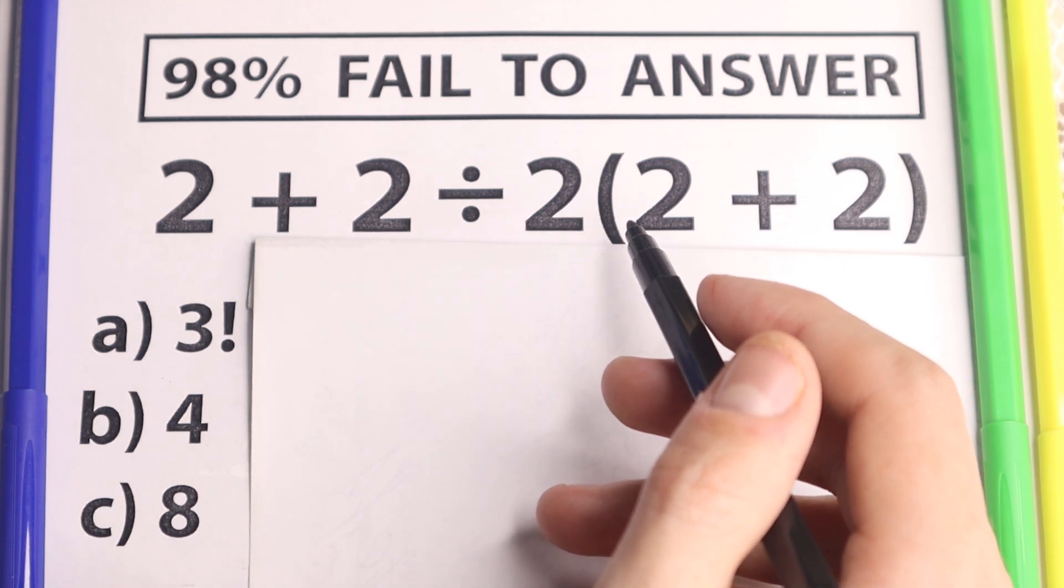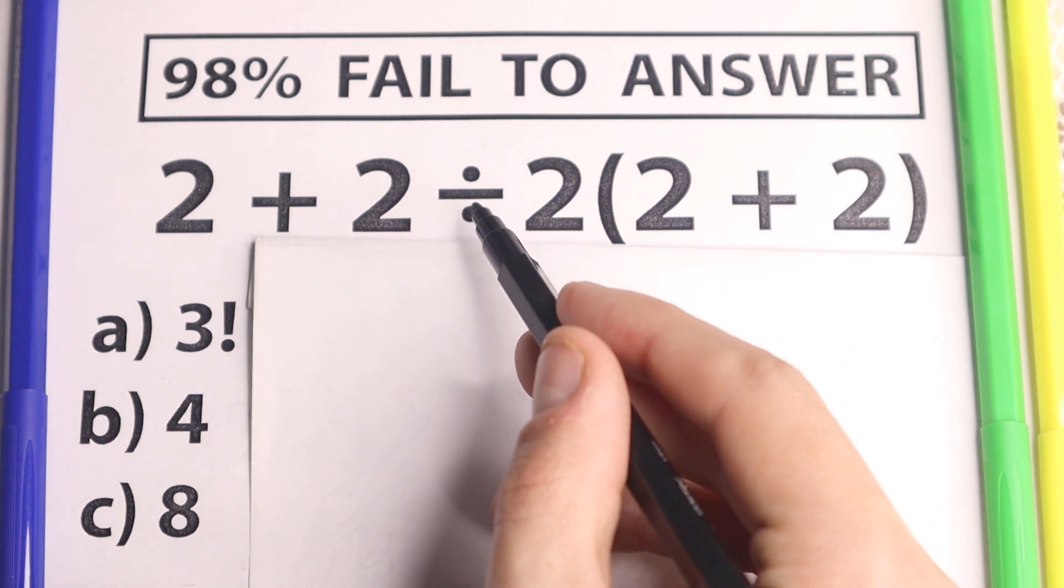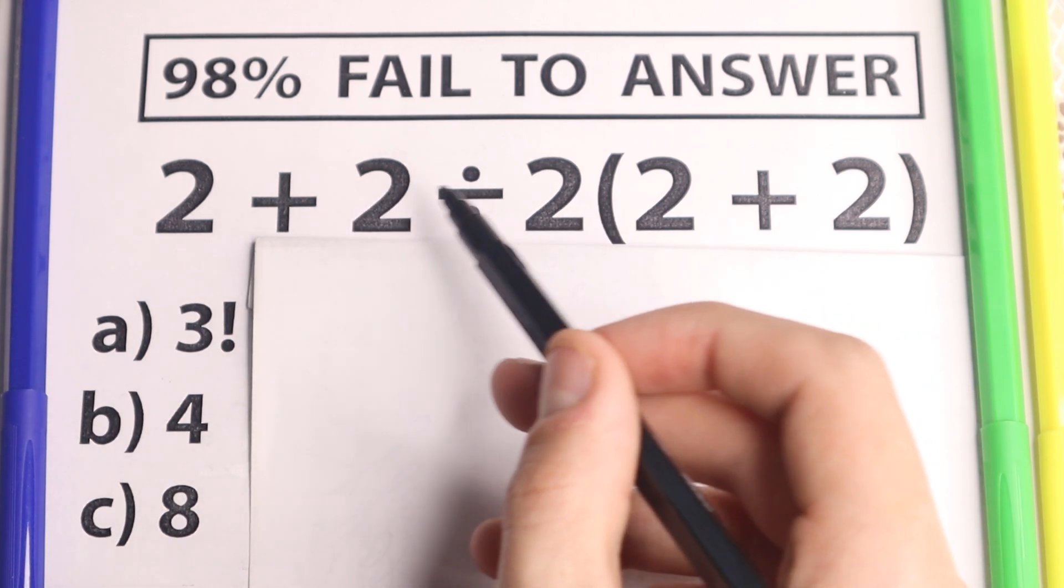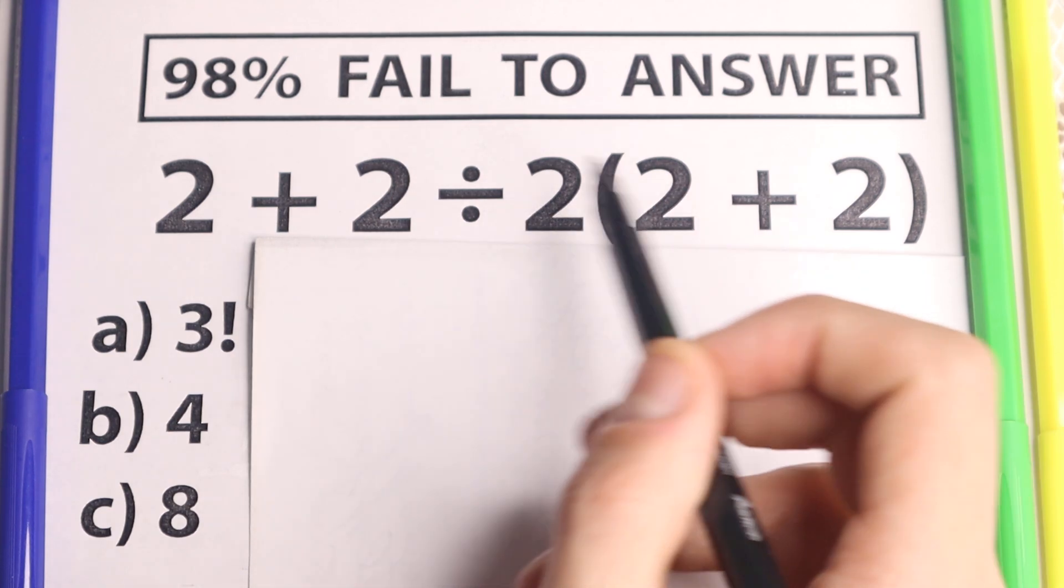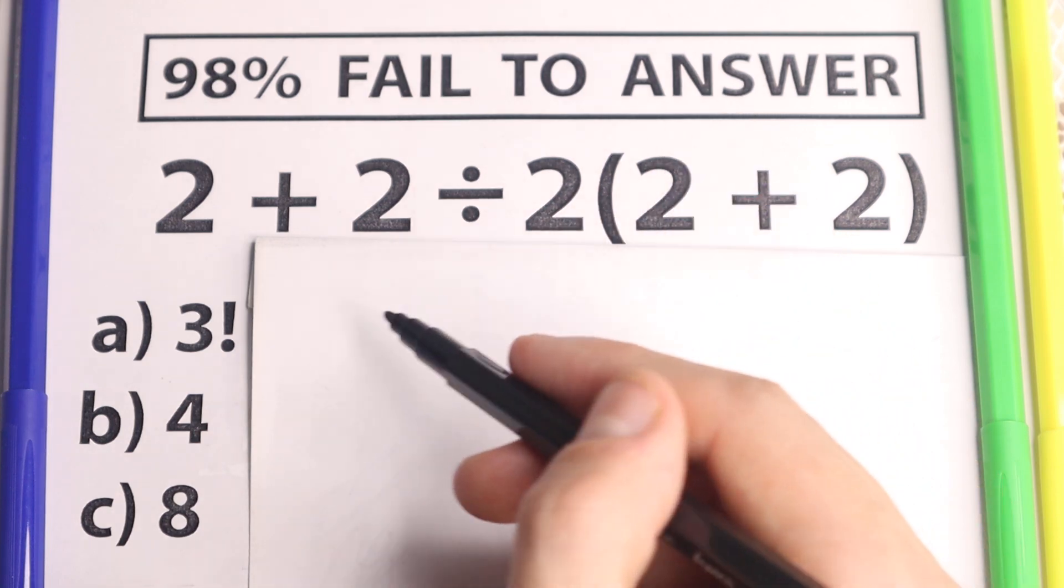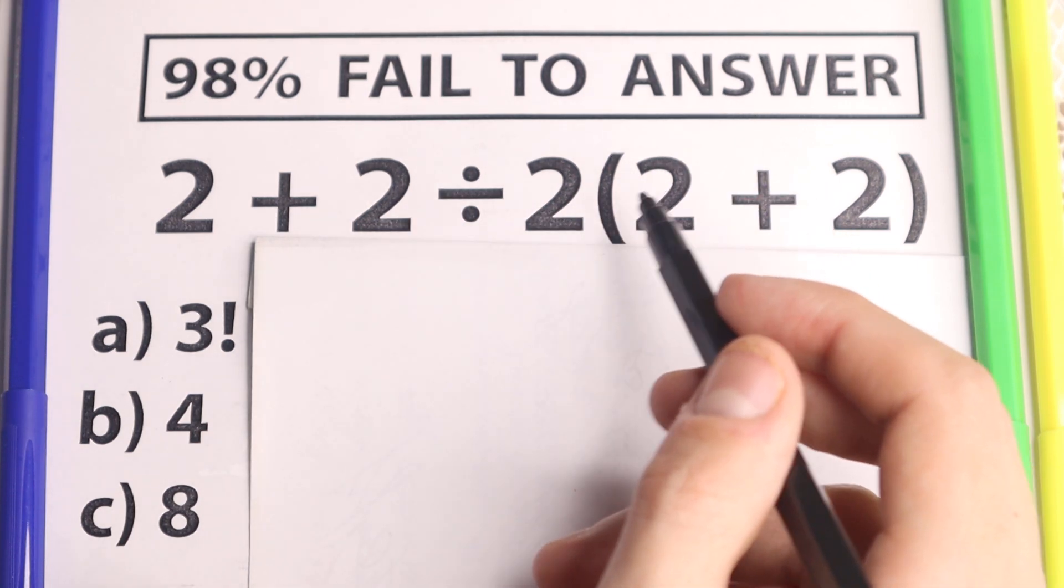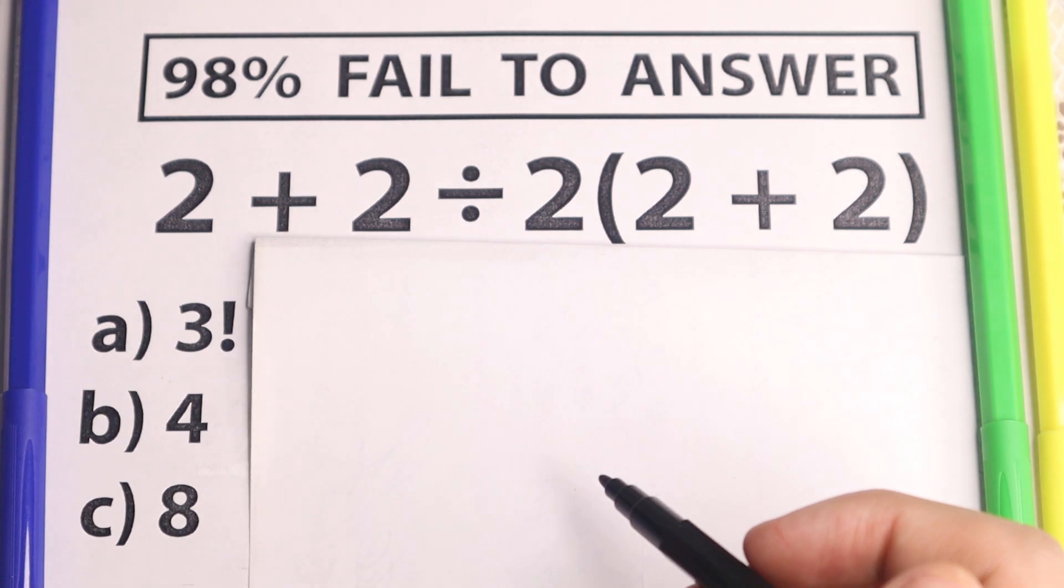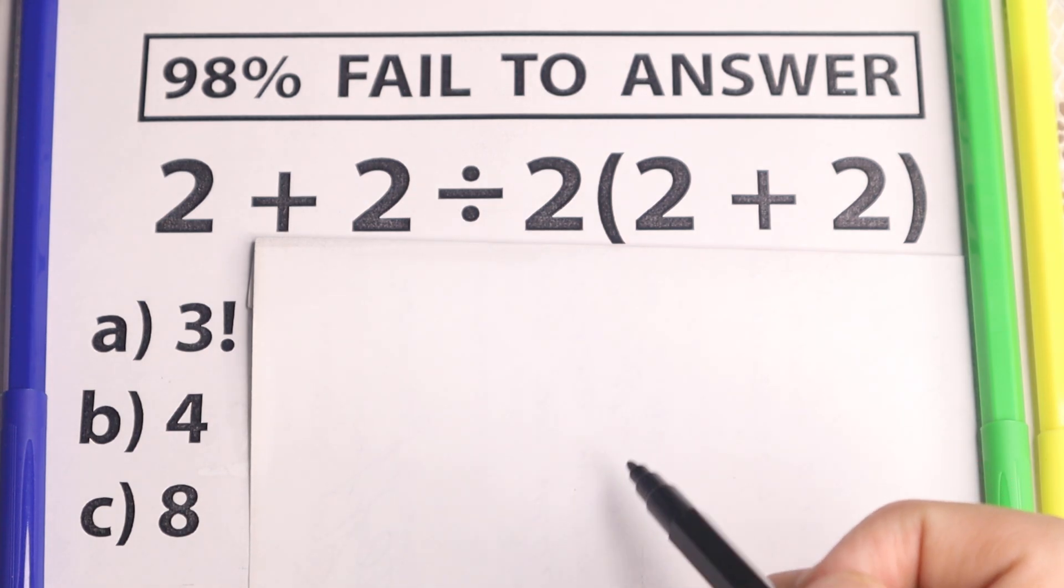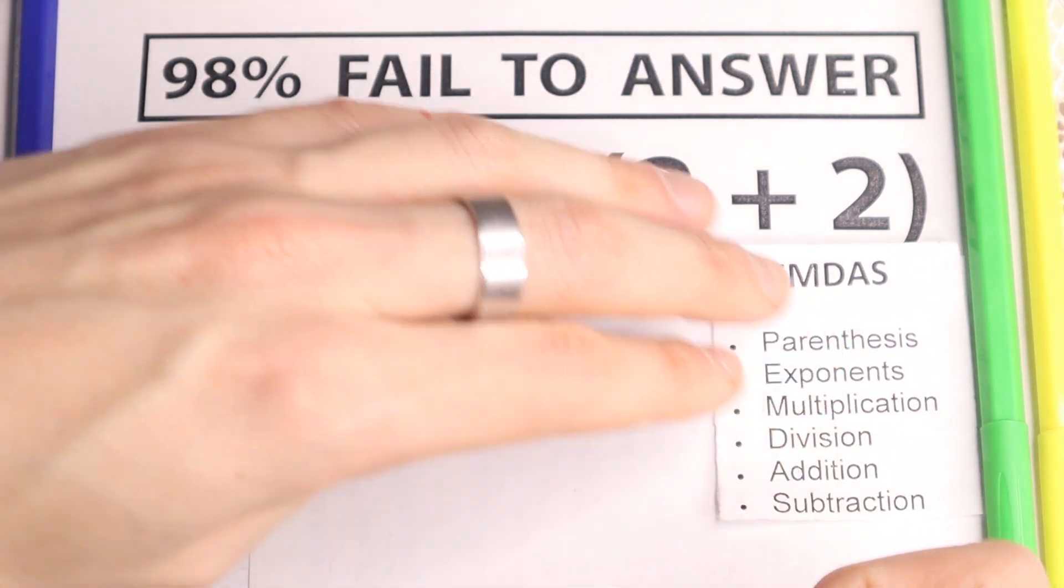So a lot of students ask themselves, do we do division first, then addition, then multiplication, or multiplication first, then addition, then division, or parenthesis first, then addition, division. As you can see a lot of combinations and a lot of different answers. So here is our problem, because obviously whatever order we select is going to create a different answer. So we need to understand what is the correct order to do this problem.